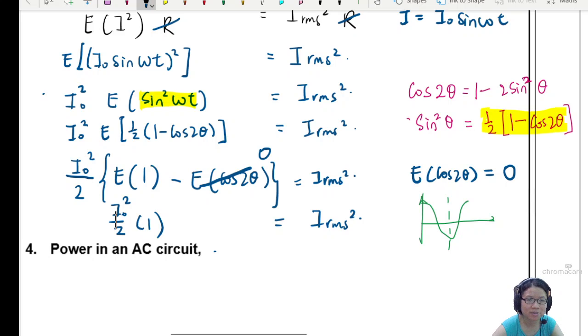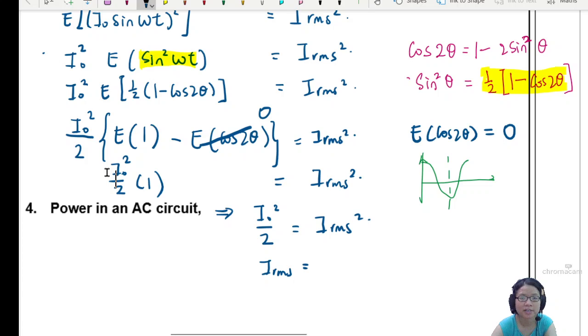So hence, we can then say that I0 squared over 2 is equal to IRMS squared. And from here, IRMS is equal to I0, bring out your square root both sides. Taking square roots from both sides. So this will be I0 over root 2 proven.